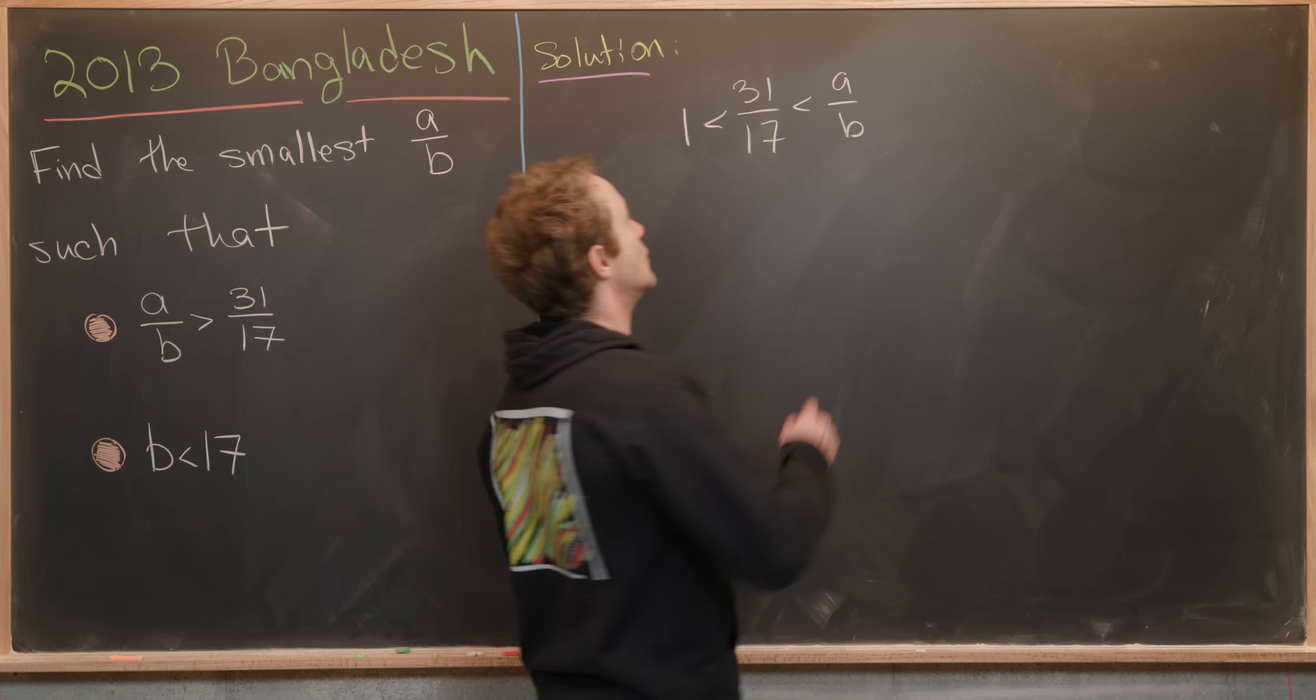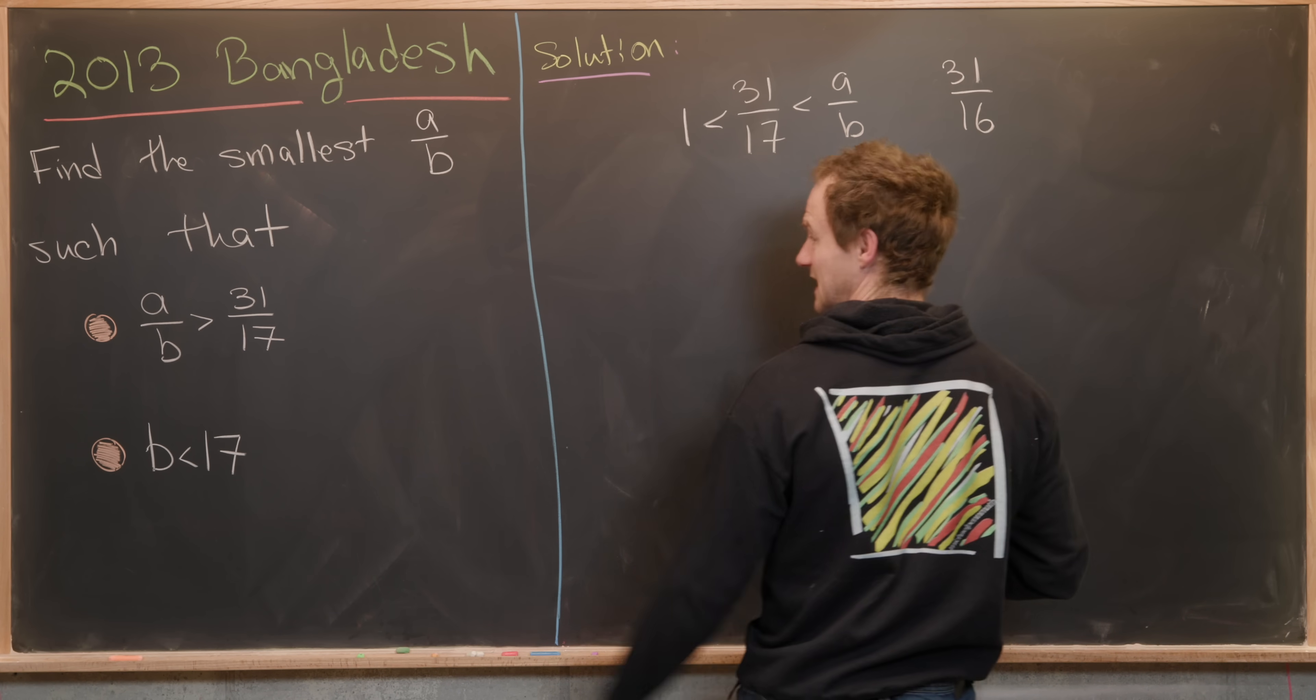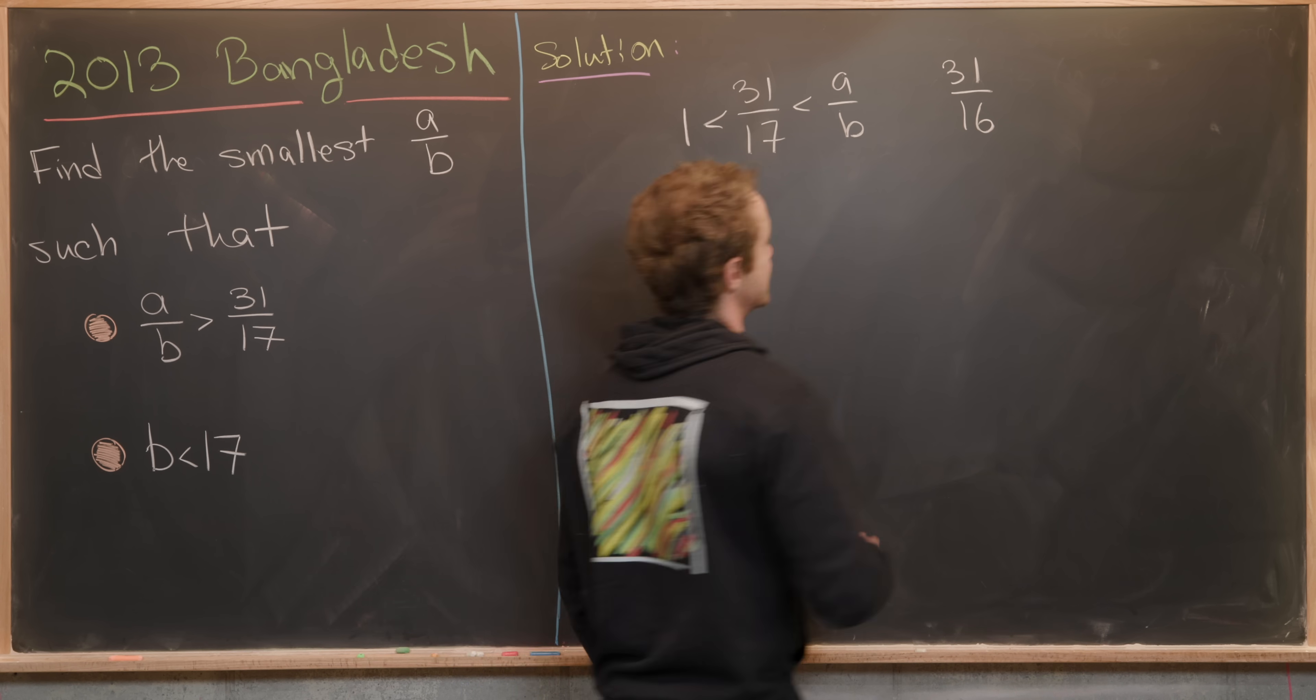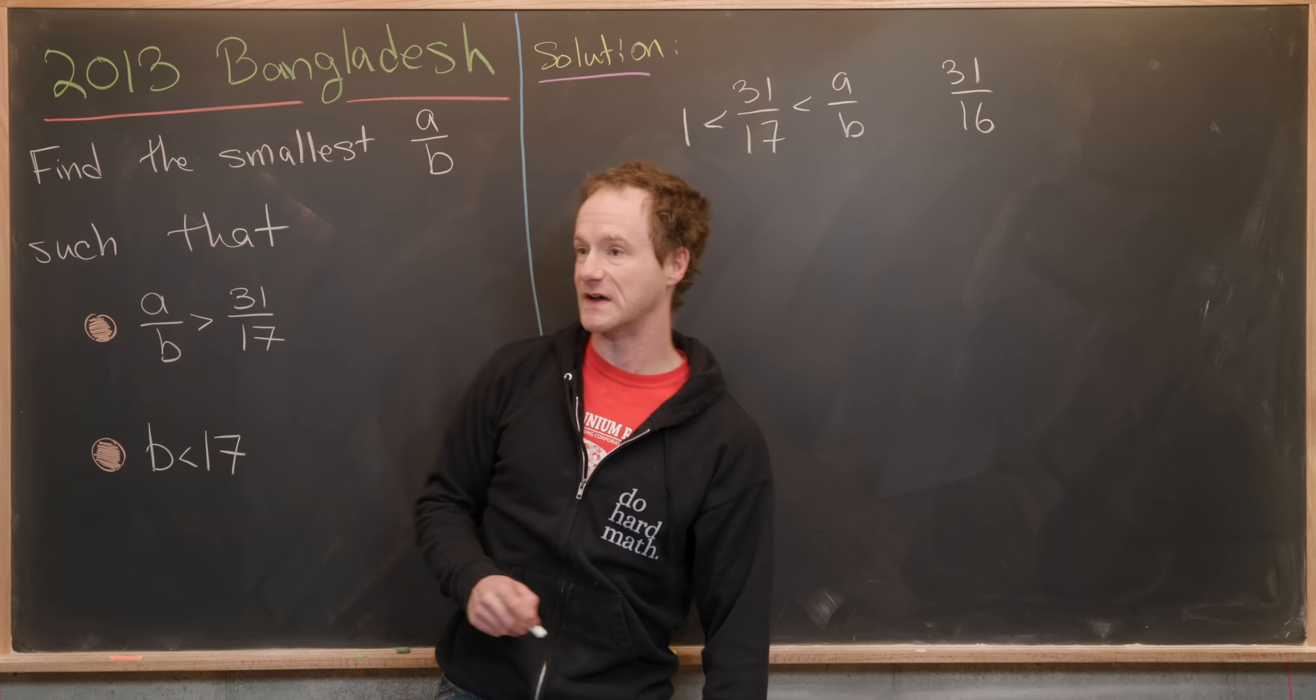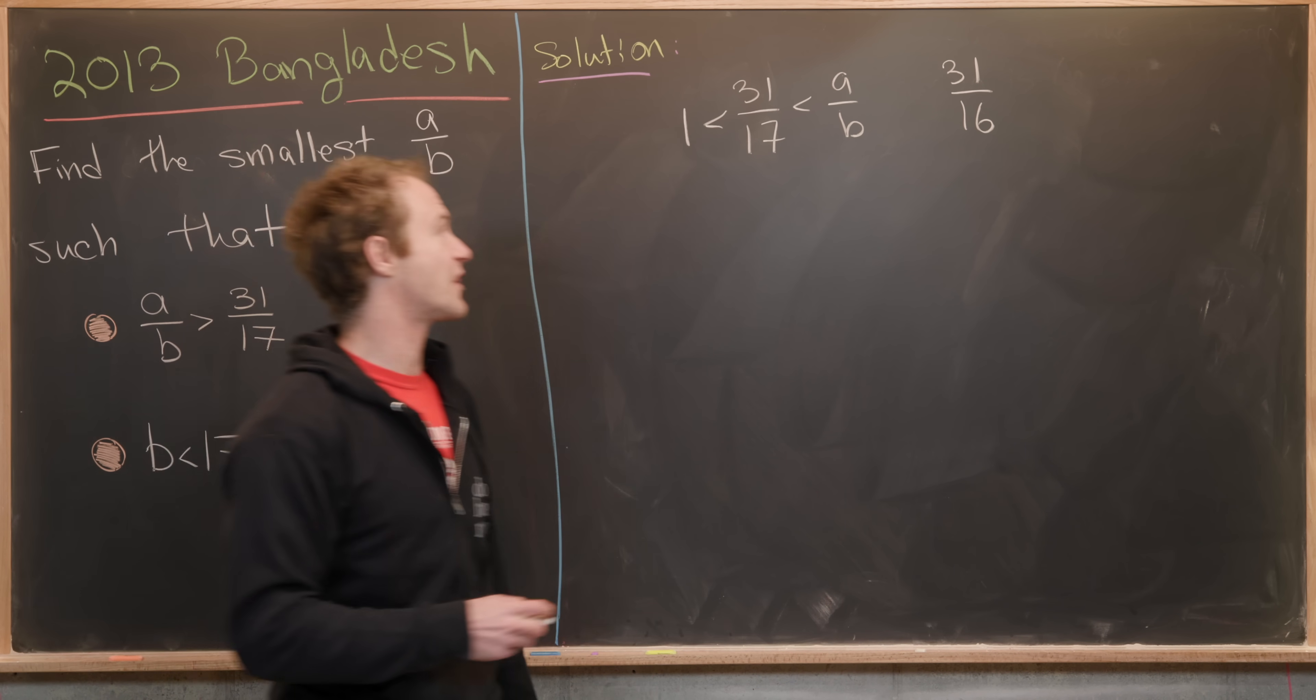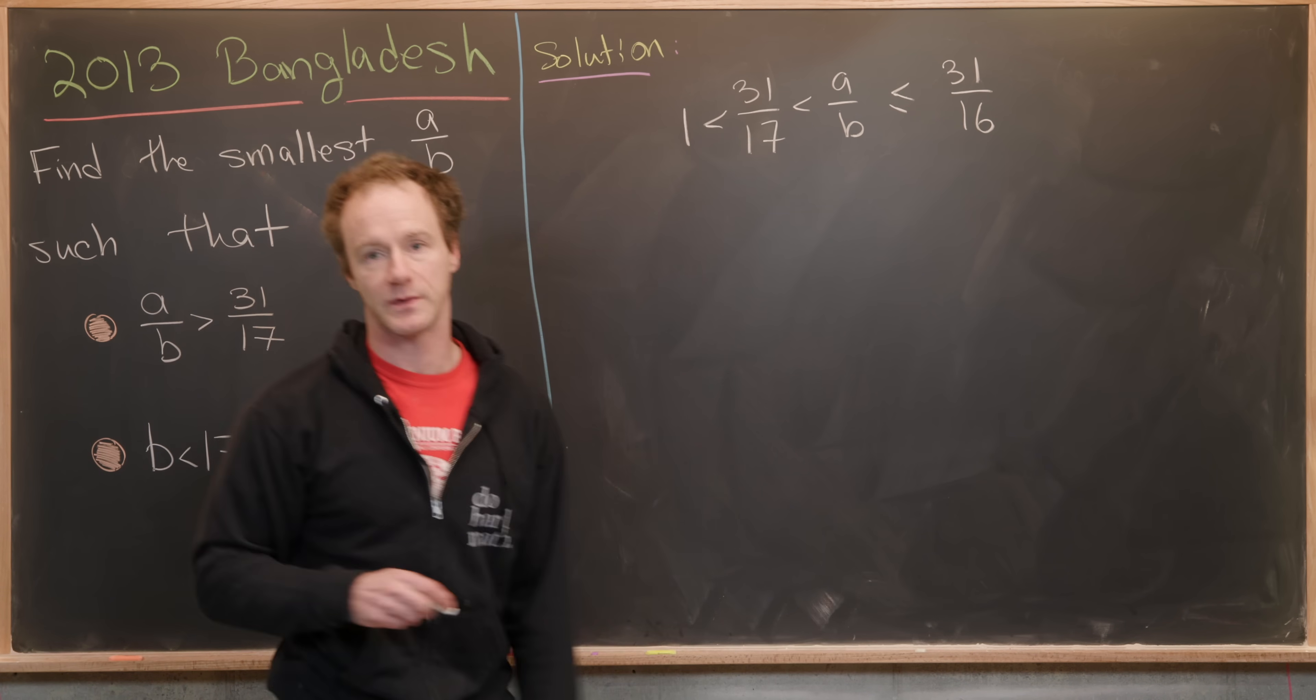Next, we can see that 31 over 16 satisfies both of these conditions. But since we're looking for the smallest number that satisfies these two conditions, we know that 31 over 16 is bigger than or equal to A over B.